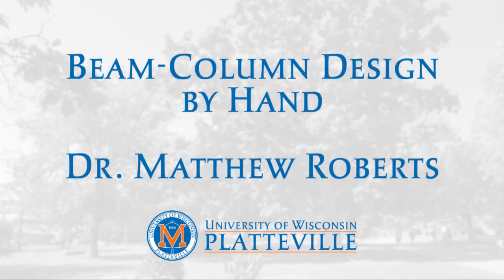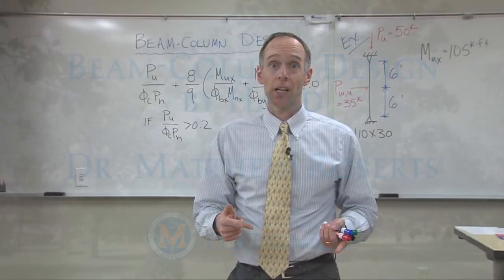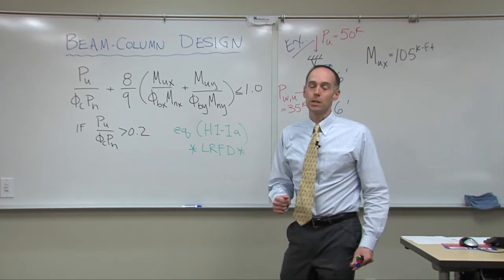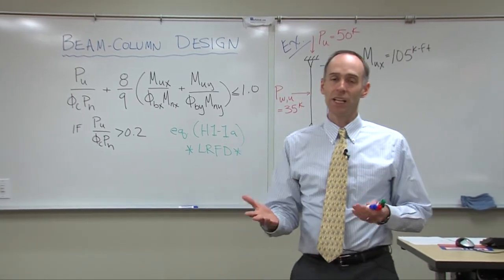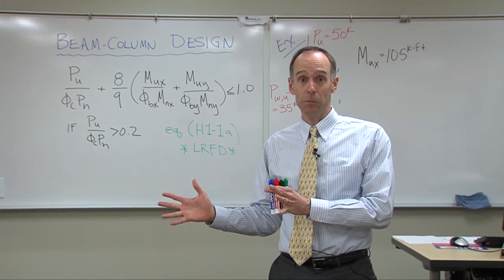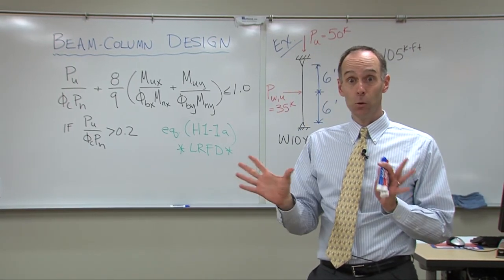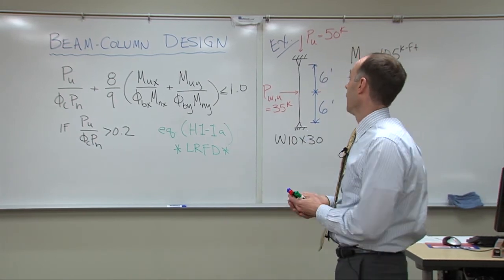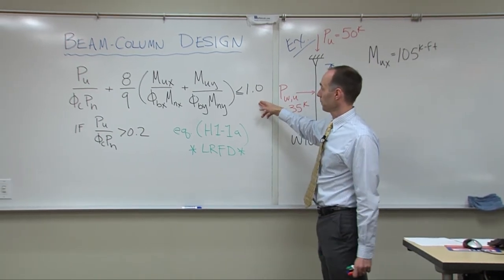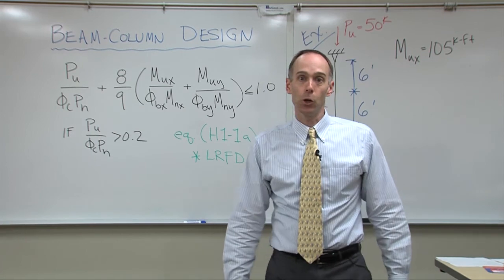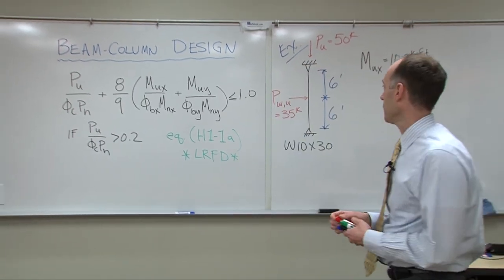What we're going to be doing today is talking about beam-column design. If you remember from when we first started talking about beam-columns, there is an interaction equation that you have to use to determine whether or not the column's good enough. You can't just check it as a column based on the axial load, then check it as a beam based on bending moment. You have to actually consider what happens when the two of them are acting together. Hopefully this equation looks familiar — that's the interaction equation, and it comes from your code in Chapter H.